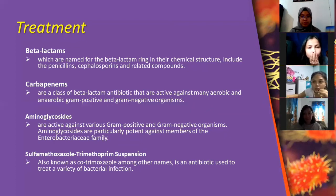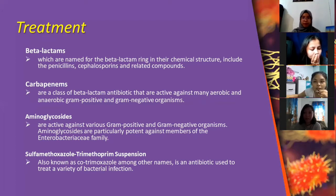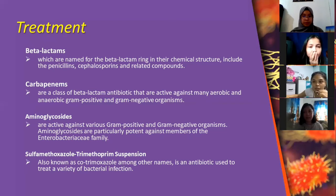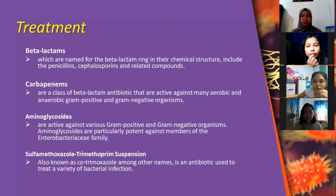The following are treatments for Enterobacter cloacae. First are beta-lactams, named for the beta-lactam ring in their chemical structure, including the penicillins, cephalosporins, and related compounds. These agents are active against many gram-positive, gram-negative, and anaerobic organisms. Next are the carbapenems, a class of beta-lactams that are active against many aerobic and anaerobic gram-positive and gram-negative organisms. Carbapenems are notable for their ability to inhibit beta-lactamase enzymes, also called penicillinase.